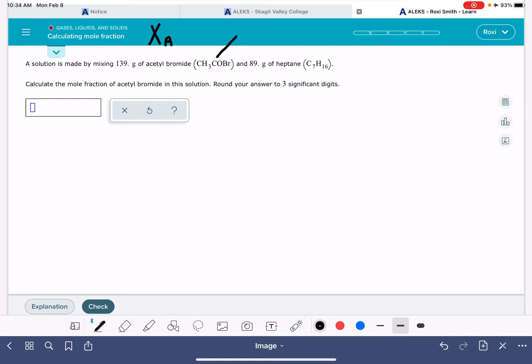So for example, this acetyl bromide, when we calculate the mole fraction for it, the symbol will be X subscript CH3COBr. And this will be X subscript C7H16.